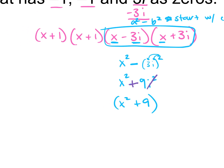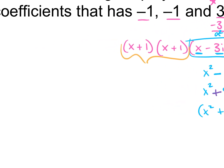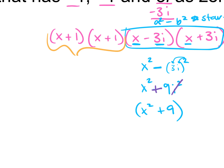Next we have the remaining two factors to multiply. You can FOIL x plus 1 to x squared plus 9, and then the other x plus 1. The order that you multiply doesn't matter — it's like if you have 4 times 2 times 2, you can multiply any two together first. Just stay organized in your work. I'm going to FOIL the two x plus 1 factors together first. So when we FOIL them we get x squared plus x plus x plus 1, which simplifies to x squared plus 2x plus 1.